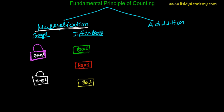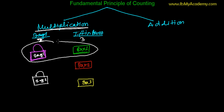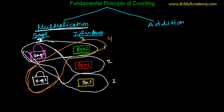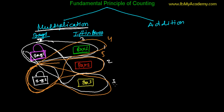I can take one bag out of the two — either the pink one or the white one. Similarly, there are three tiffin boxes: the green one, the red one, or the yellow one. So I can take the pink bag with the green tiffin box — that's one way; pink with red — two ways; pink with yellow — three ways. Then white bag with green — four ways; white with red — five ways; white with yellow — six ways. So there are six total ways of selecting a bag and tiffin box together.